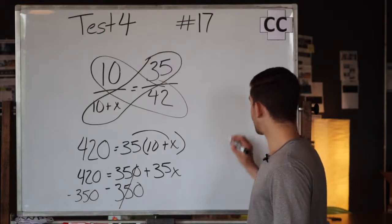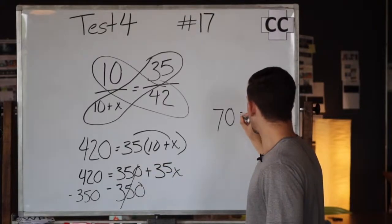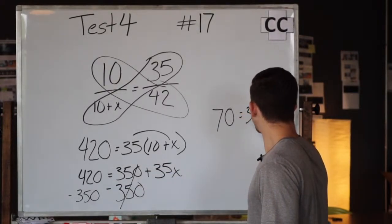420 minus 350 moving up here now is 70. So we have 70 now equals 35x.